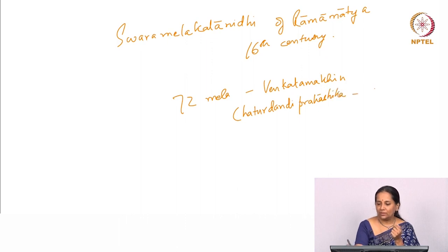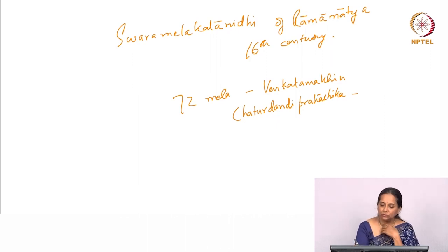Bhatkhande acquired a copy of the Chaturdandi Prakashika, a 17th-century text. In Carnatic music even today, the system of Mela that is used sets forth 72 Melas — 72 such combinations of swaras under which ragas can be classified.